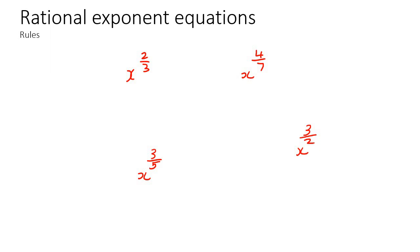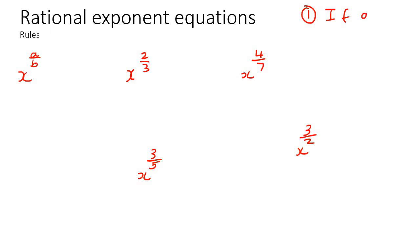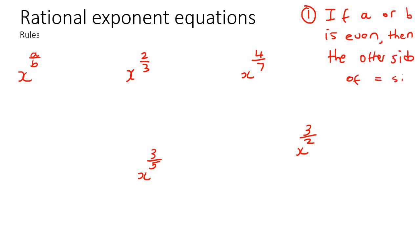I always want you to look at these rational parts. If there is an even number — here's rule number one — say the general form is A over B. If A or B is even, like 2, 4, 6, 8, 10, then the other side of the equal sign cannot be negative.